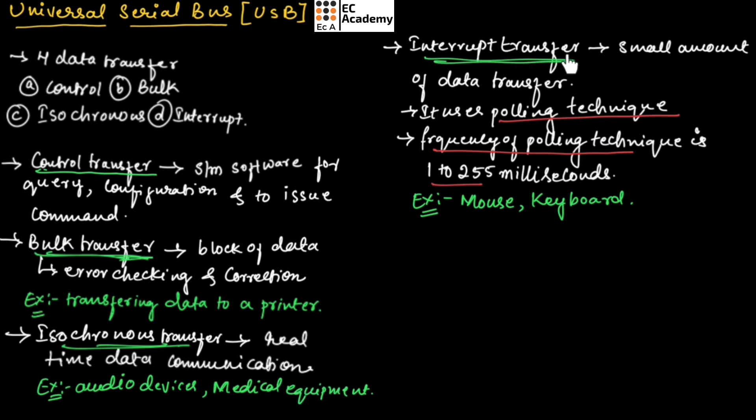Next is interrupt transfer. The interrupt transfer uses small amounts of data transfer. It uses polling technique to check whether the USB device has any data to send. The frequency of polling technique is from 1 to 255 milliseconds.